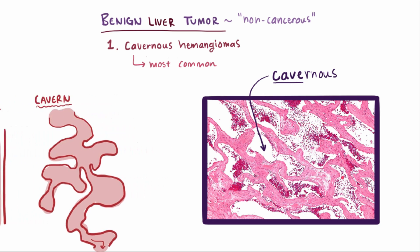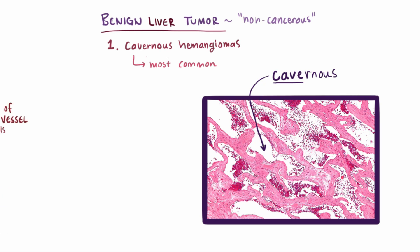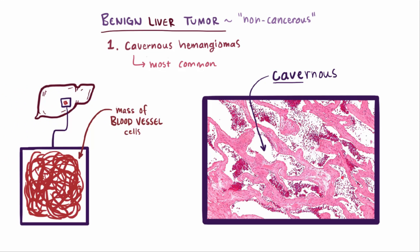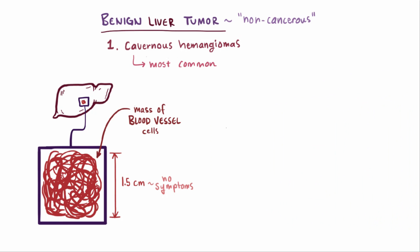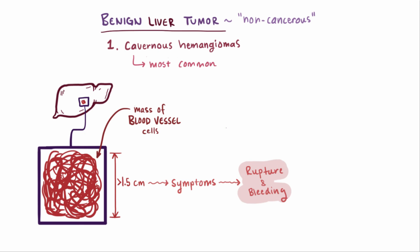Although these vascular spaces look huge on histology, most patients have relatively small lesions, usually less than 1.5 cm, and therefore don't have any symptoms. In more rare cases with larger lesions, patients might develop symptoms, and in very rare cases experience rupture and intraperitoneal bleeding.